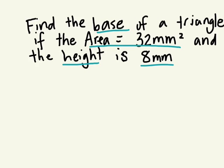So first we can write the formula. Area of a triangle is equal to base times height divided by 2.